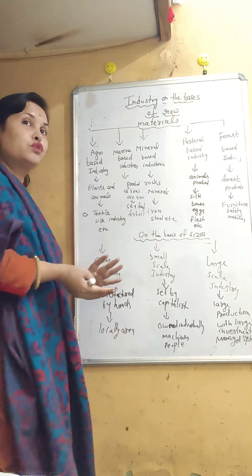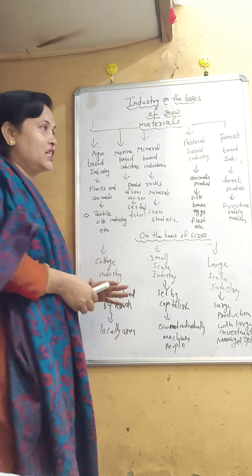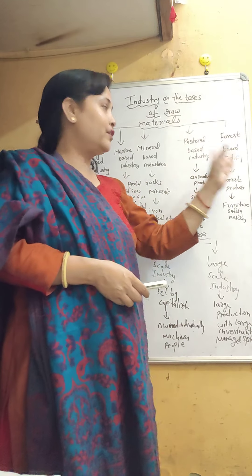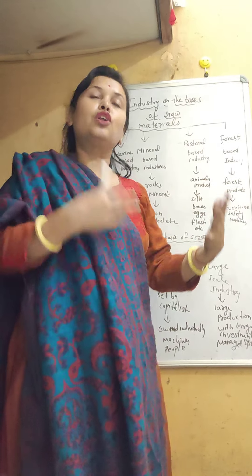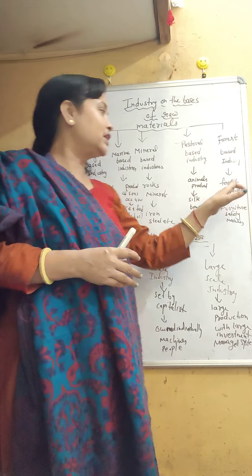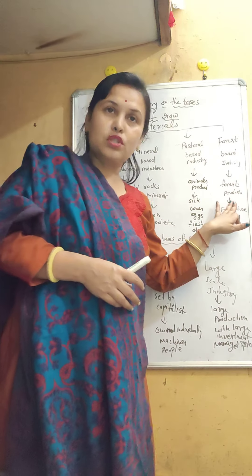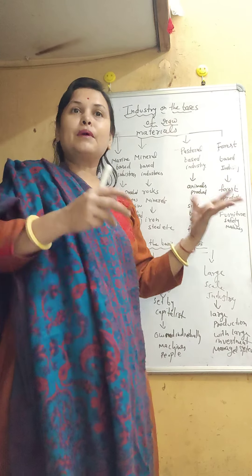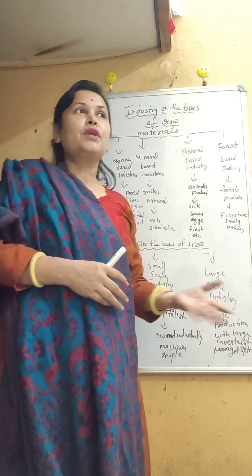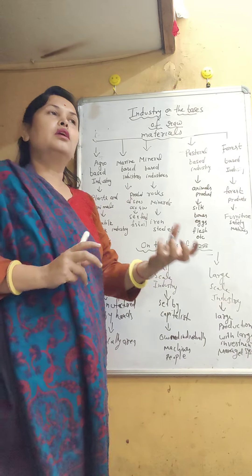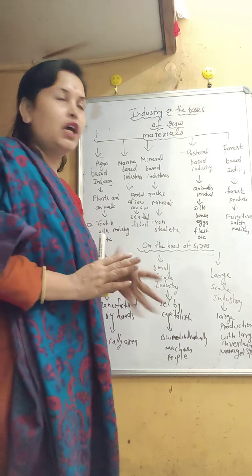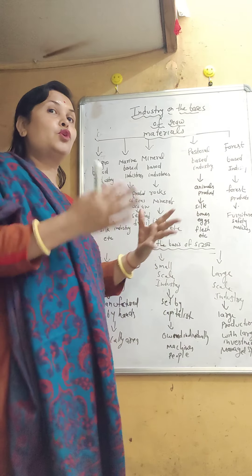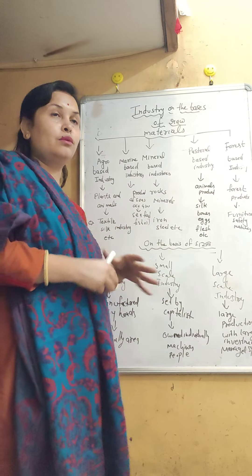The next type of industry is forest-based industry. It means that raw materials are sourced from forest products. For example, furniture and matches, which we find in forest products and use as goods or manufactured items.